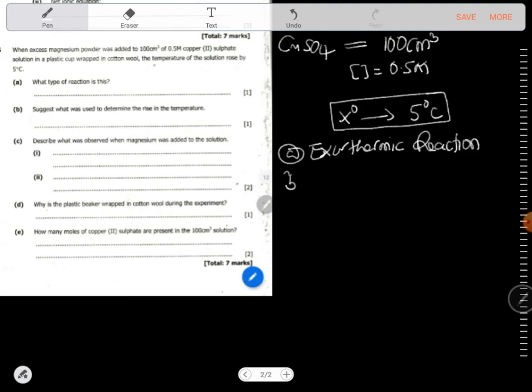So it's an exothermic reaction. Then B says suggest what was used to determine the rise in temperature. As long as they're talking of temperature, you have to take into consideration that the instrument that can be used to measure the temperature is a thermometer. So it's a thermometer.